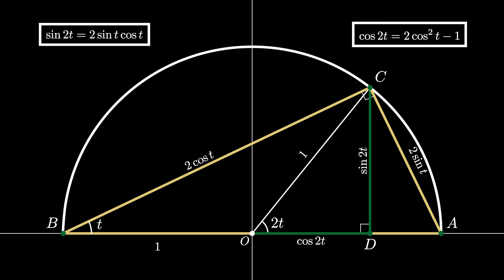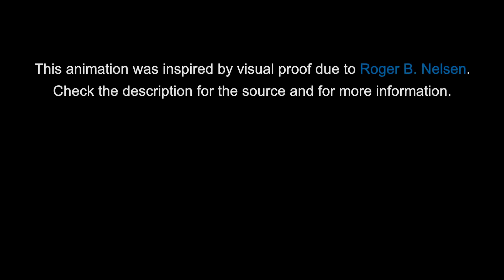Together these form the double angle identities for sine and cosine and we prove them using a semicircle diagram. This proof is due to Roger B. Nelson. Check the description for more information about this proof or for a link to another proof that uses the law of sines and the law of cosines in a triangle.